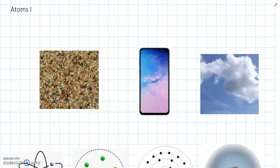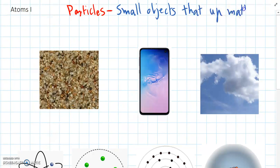Previously we've learnt about particles that they're small objects that make up matter. And previously we've seen that particles can be visible to the human eye. So sand grains, they're a particle, but they're big enough that we can see just by looking at them.